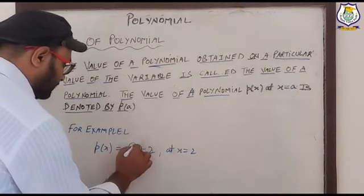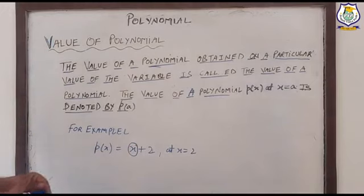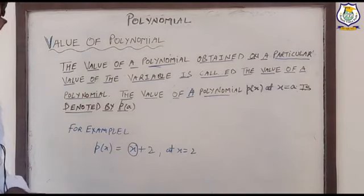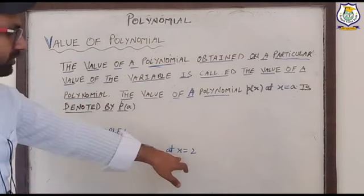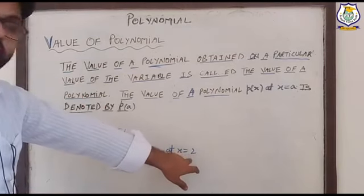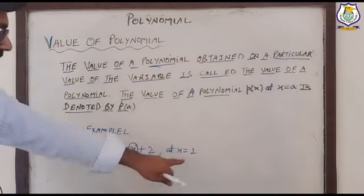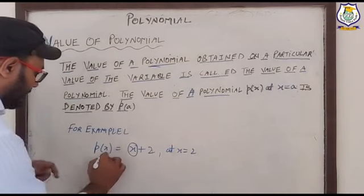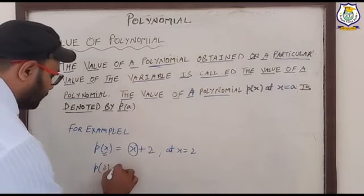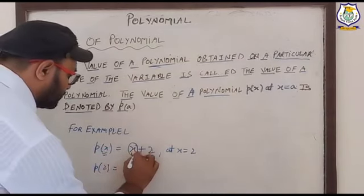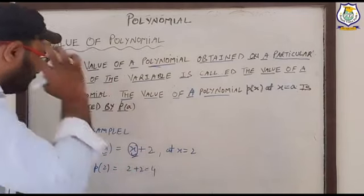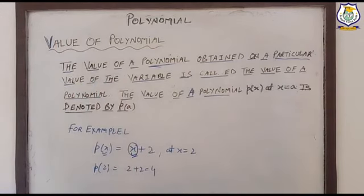What we have to do is remove the variable x and put two in its place. So wherever we see x, we remove it and put two. The first x: replace with two. The second x: replace with two. This gives us two plus two, which is equal to four. Four is the value of the polynomial.